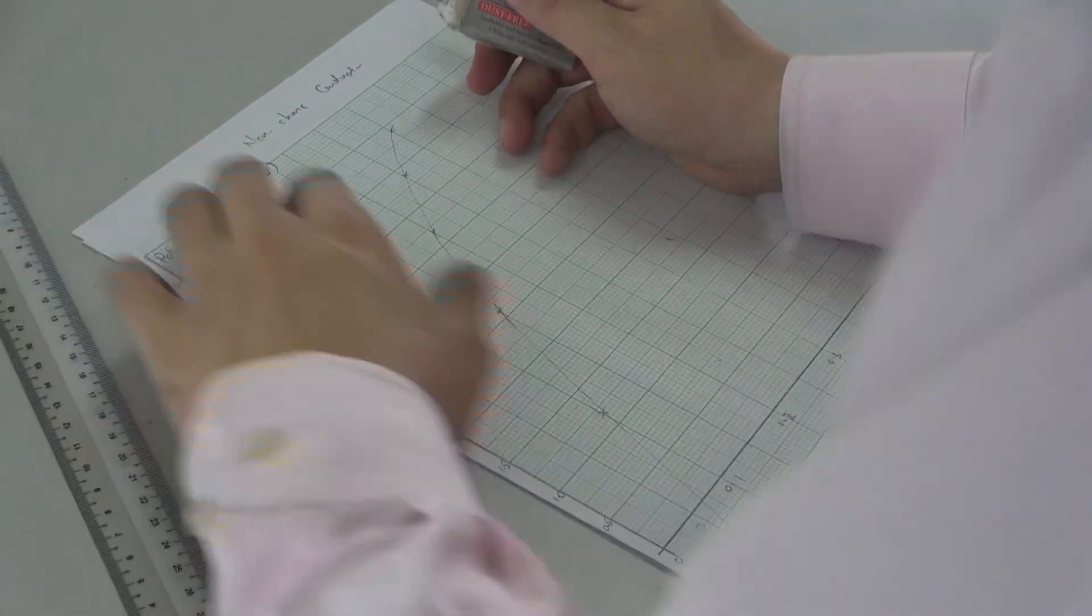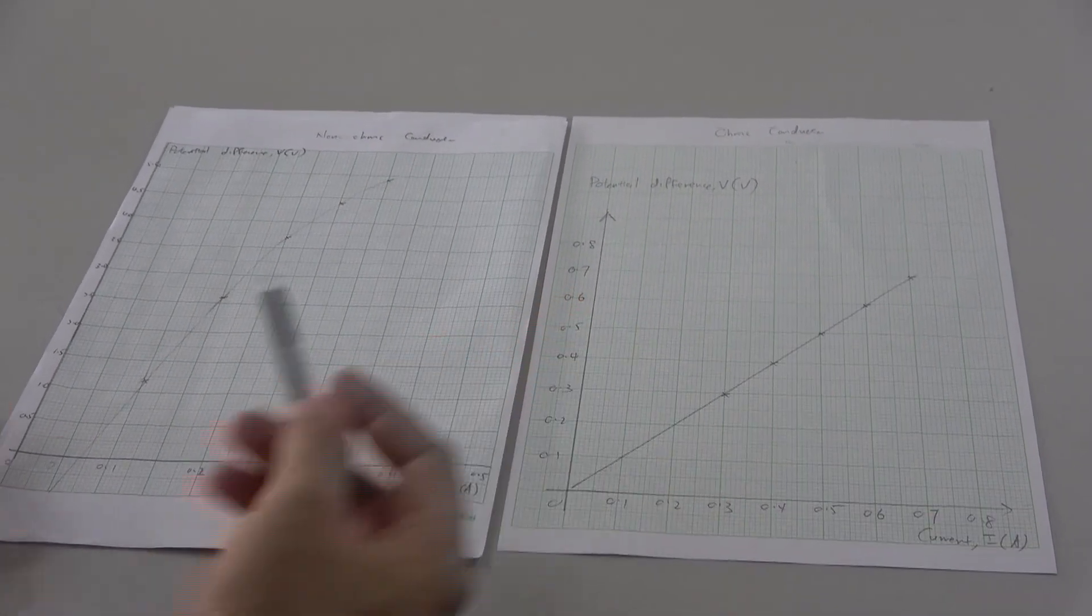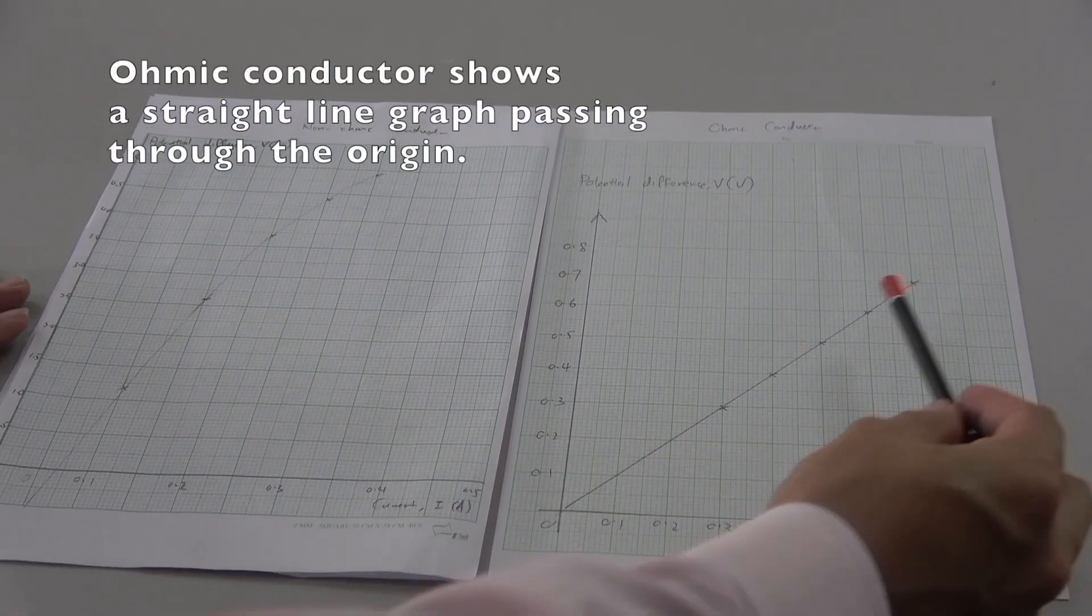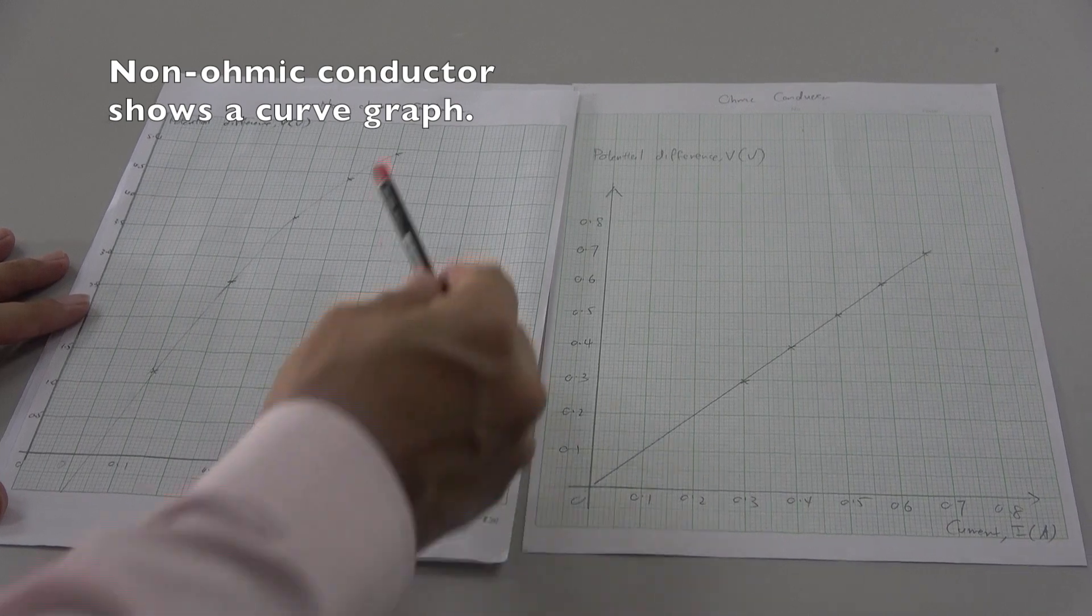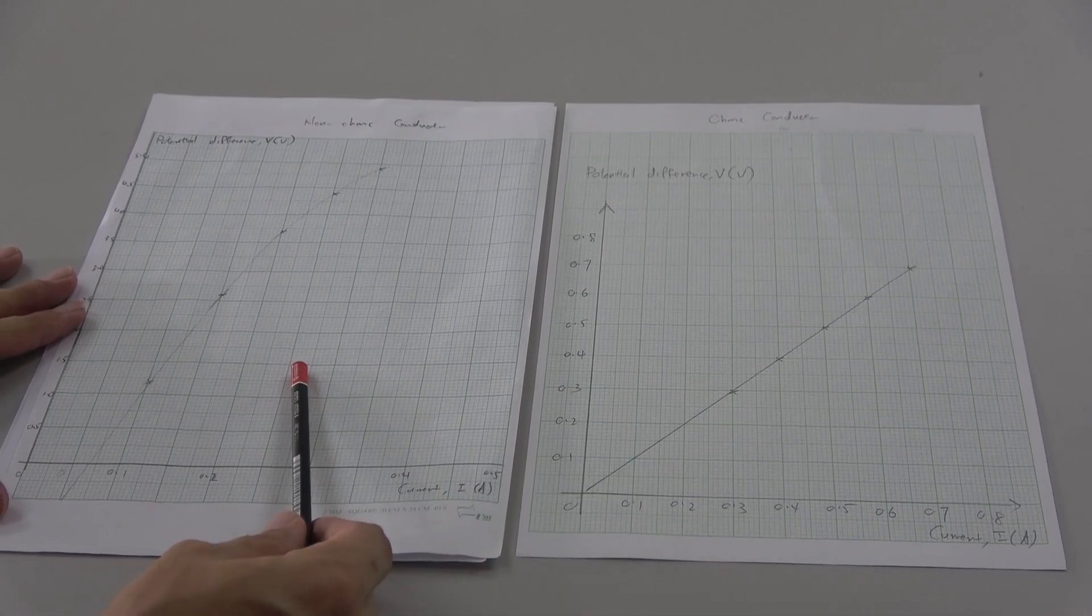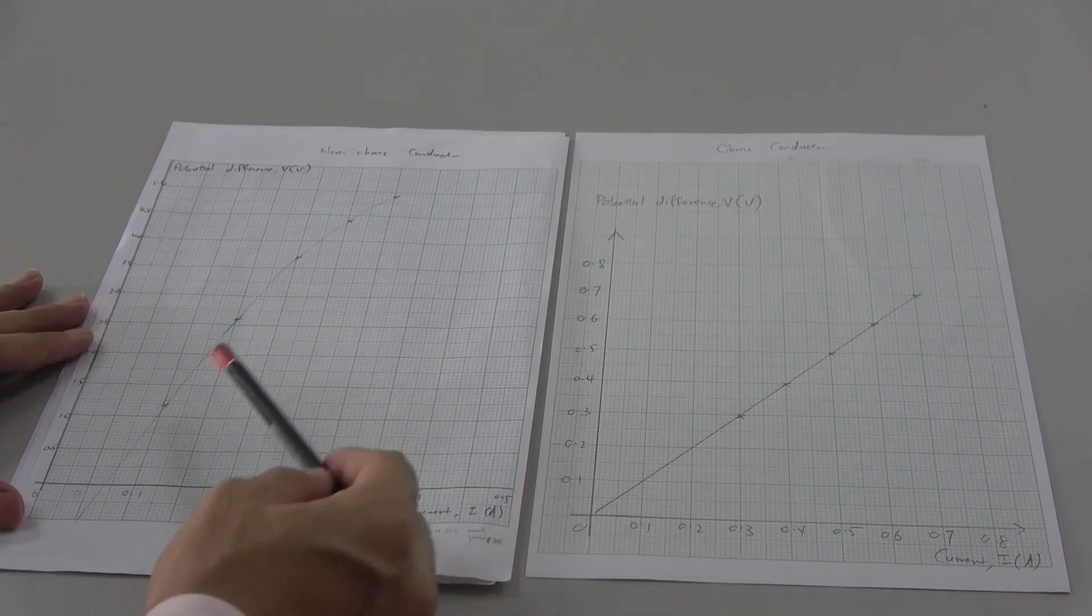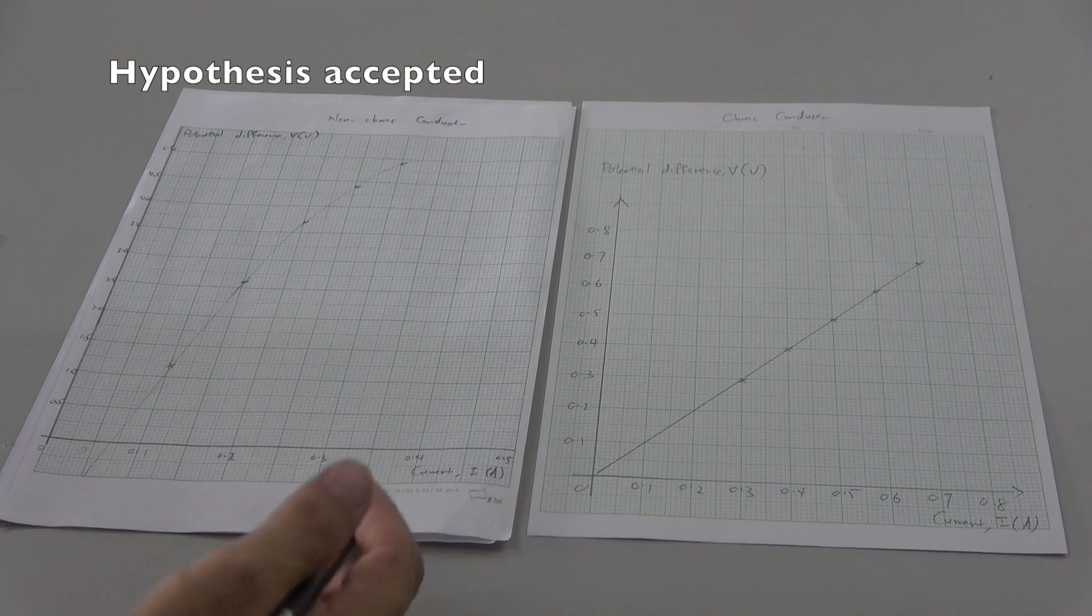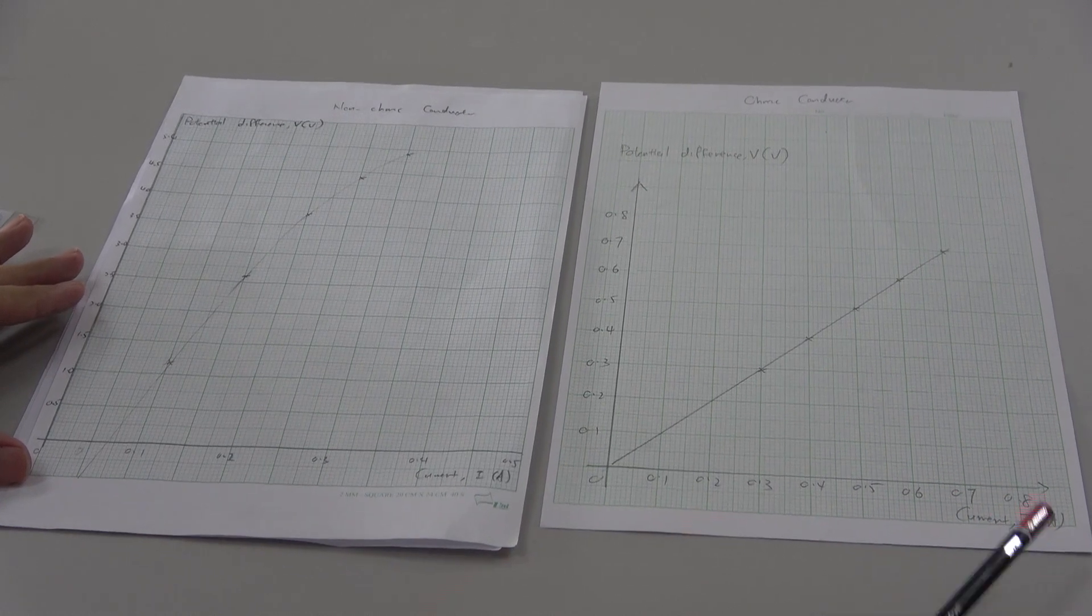After we have obtained the two graphs for ohmic conductor and non-ohmic conductor, I will start to compare the two graphs. For ohmic conductor, we see a straight line which passed through the origin. However, for non-ohmic conductor, which is the bulb in this experiment, it shows a curve. This is a major difference between the ohmic conductor and non-ohmic conductor. Because for ohmic conductor, it is a straight line which means that the resistance will remain as constant. But for non-ohmic conductor, we get a curve line. That means that our hypothesis is accepted. The potential difference will increase when our current increases. Thank you.